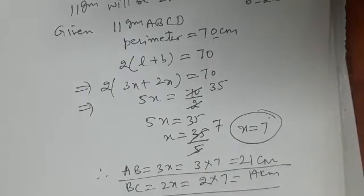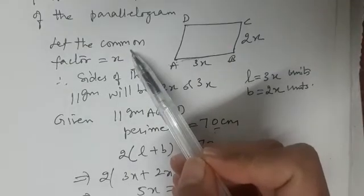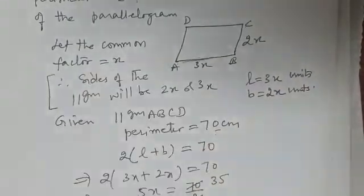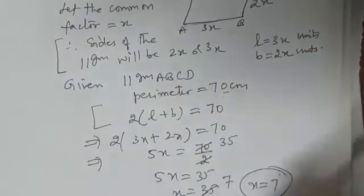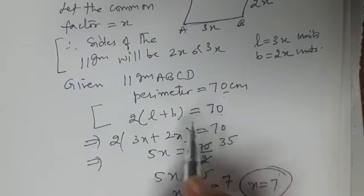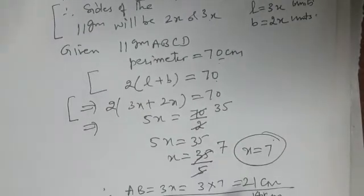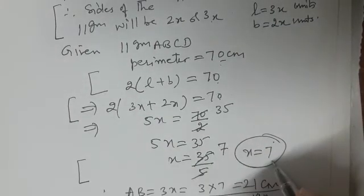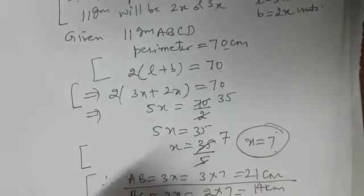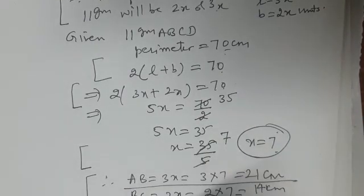I hope it is clear. What are the main value points? First, you are assuming the common factor and writing the sides as 2x and 3x. Then you are using the formula for perimeter: 2(l+b) equals 70. Then you make the equation 2(3x+2x) equals 70. Then you simplify and get the value of x. The final value point is writing the answer for AB and BC. These are the important steps you need to do in the examination.